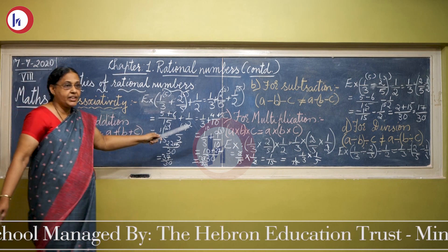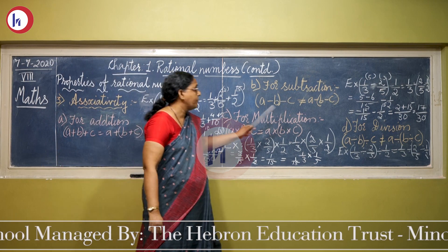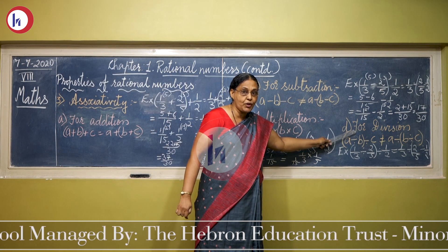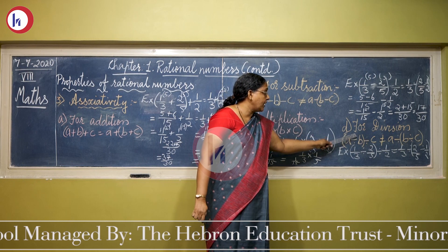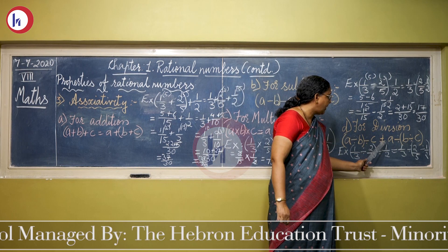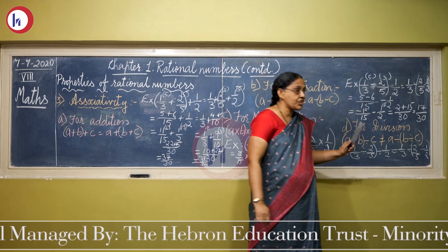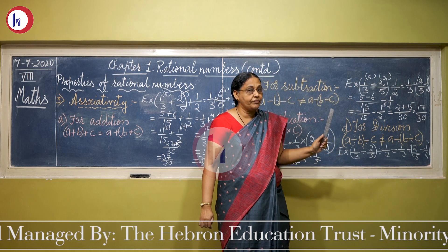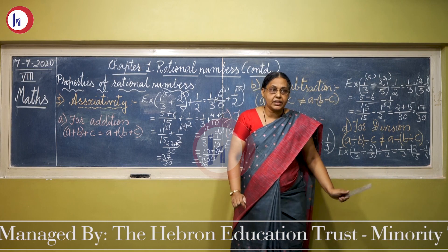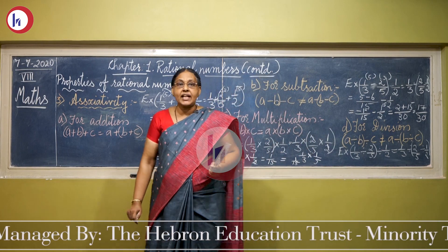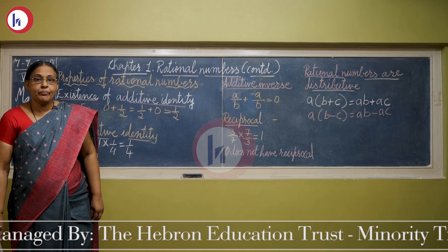In the same way, we can show that for division, the associative property does not hold. We can conclude that rational numbers are not associative for division.